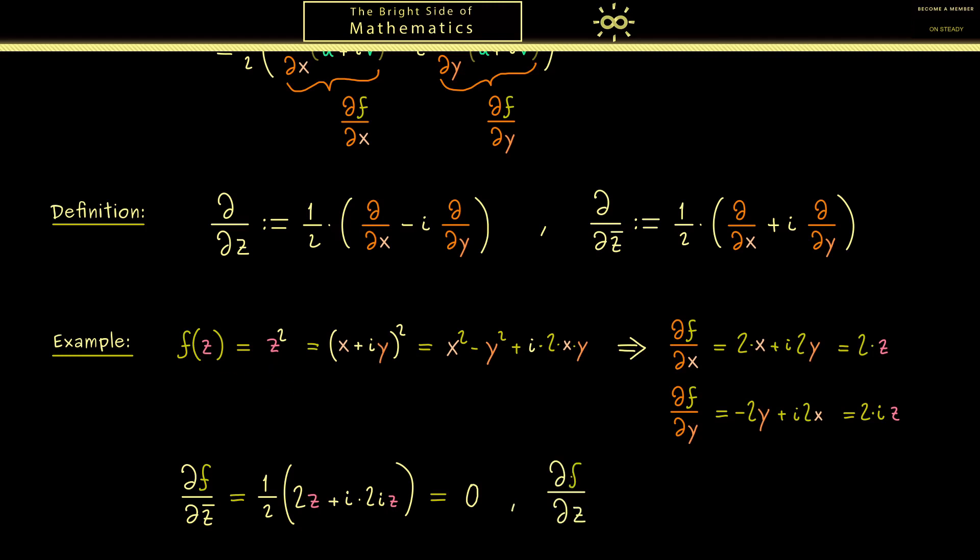Then in the next step it's not hard to calculate ∂f/∂z. It's the same calculation as before but now with a minus sign here. Therefore in this case in the parentheses we have 2z plus 2z divided by 1/2 gives us back 2z. Also here the result is not surprising because it should give us the complex derivative of f.